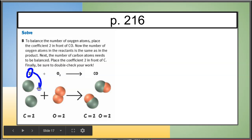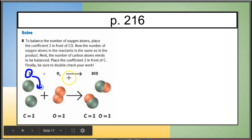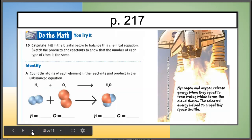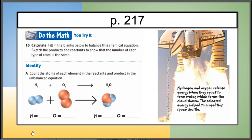We also need a two in front of the carbon monoxide. The two shows two carbon atoms on the left, and the two in front of CO shows two carbon monoxide molecules on the right. No coefficient is needed in front of O2, although you could put a one. Now this is a 'you try it' — let's see if you can figure this one out.